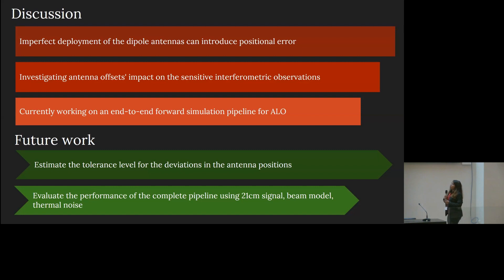To conclude, my talk is focused on the antenna position offset does have a potential impact on the power spectrum estimation. And as a first-order investigation, we are trying to understand the positional offset impact on the power's point-spread function, the 2D power spectrum. And the final goal is to develop a framework where we can give an acceptable tolerance level for the dipole placement errors.